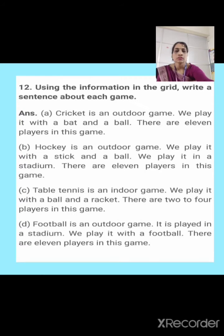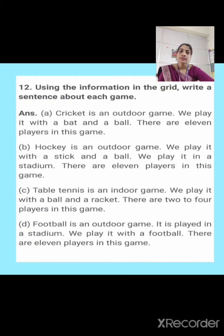Now the next question: using the information in the grid, write a sentence about each game — one has been done for you. First, cricket is already done: Cricket is an outdoor game. We play it with bat and ball. There are eleven players in this game. Now for hockey: Hockey is an outdoor game. We play it with a stick and a ball. We play it in a stadium. There are eleven players in this game.